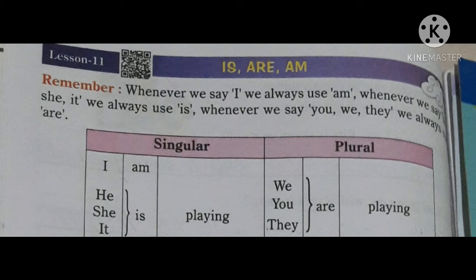Children, 'is' and 'am' are used in singular form. 'He', 'she' use 'is'. 'Am' is used for 'I'. 'Are' is used for 'you', 'we', 'they'. These are the words — how to use 'is', 'am', or 'are' in a sentence.